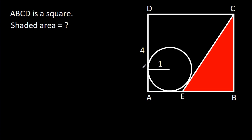In this video, we have been given that ABCD is a square and AD is 4 and the radius of the circle is 1. We have to find the shaded area.